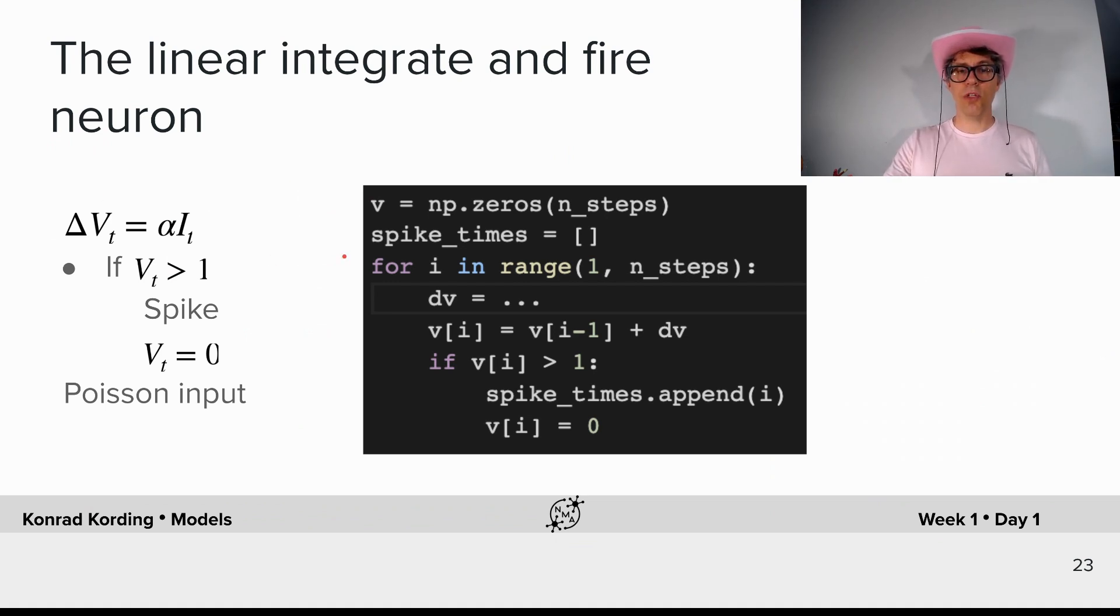And now here's what you will have to do. We give you code that already does a lot of this. We initialize the voltage, we initialize the spike times, we will be integrating over some period of time. You will calculate the voltage change, which then gets integrated over time. And here's already the spike mechanism. If the voltage is greater than one, we make a spike and then we set the voltage to zero. Enjoy your first interesting model.